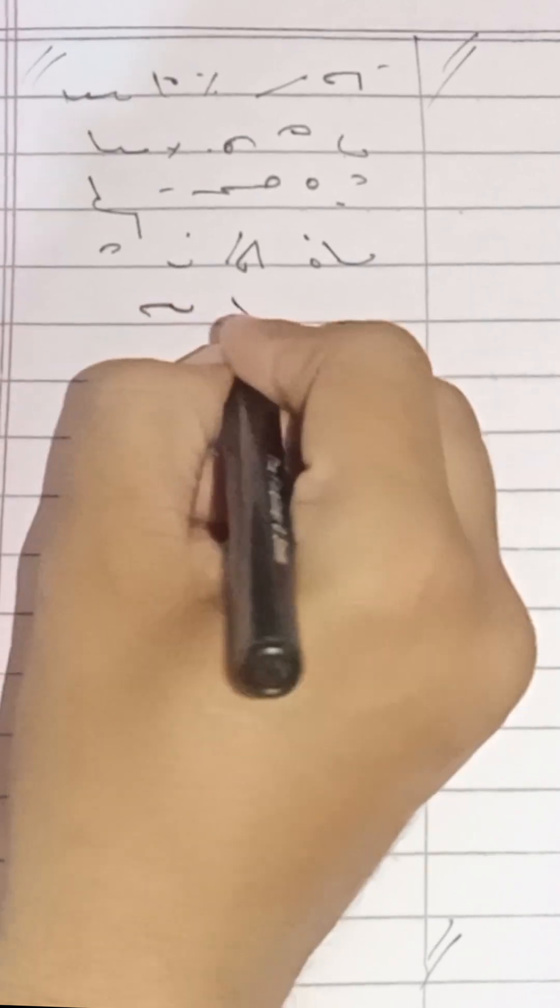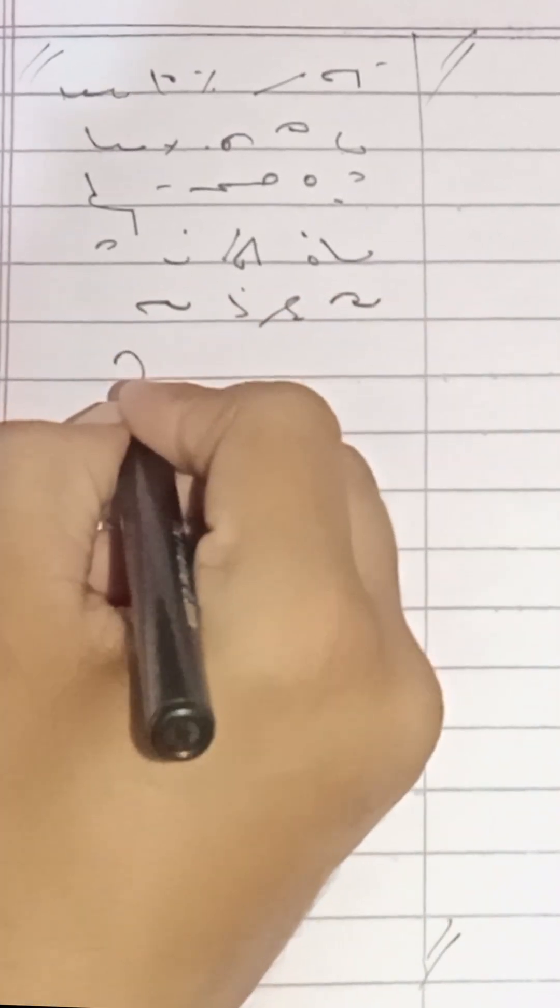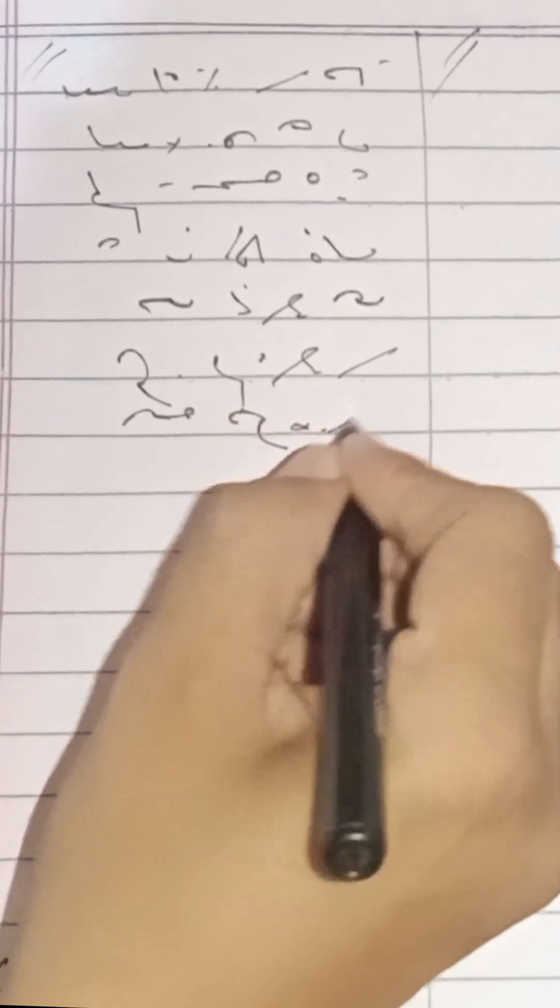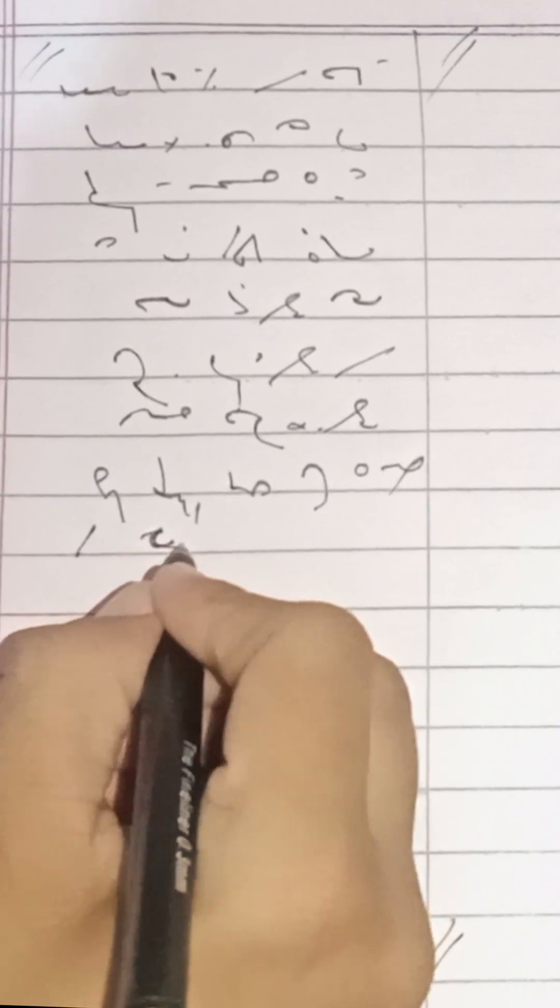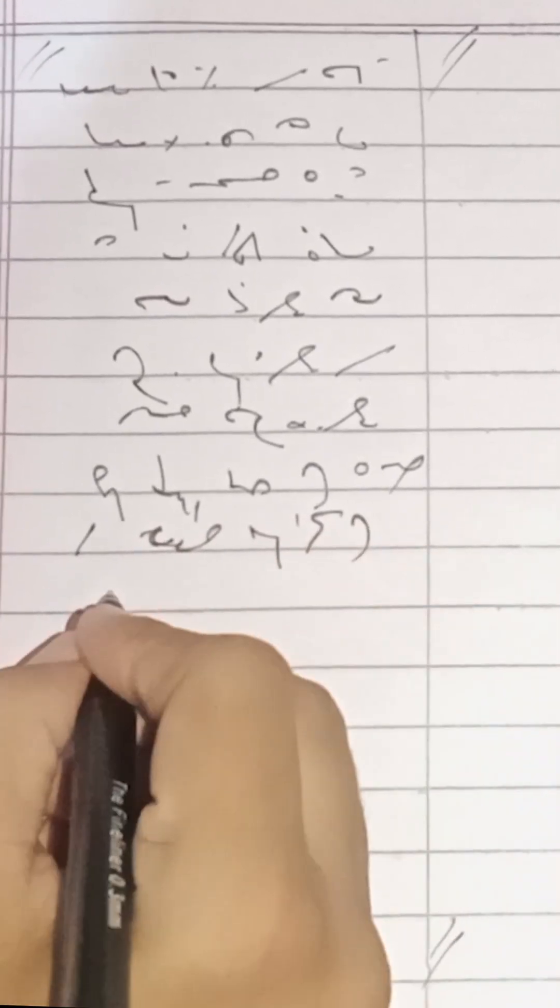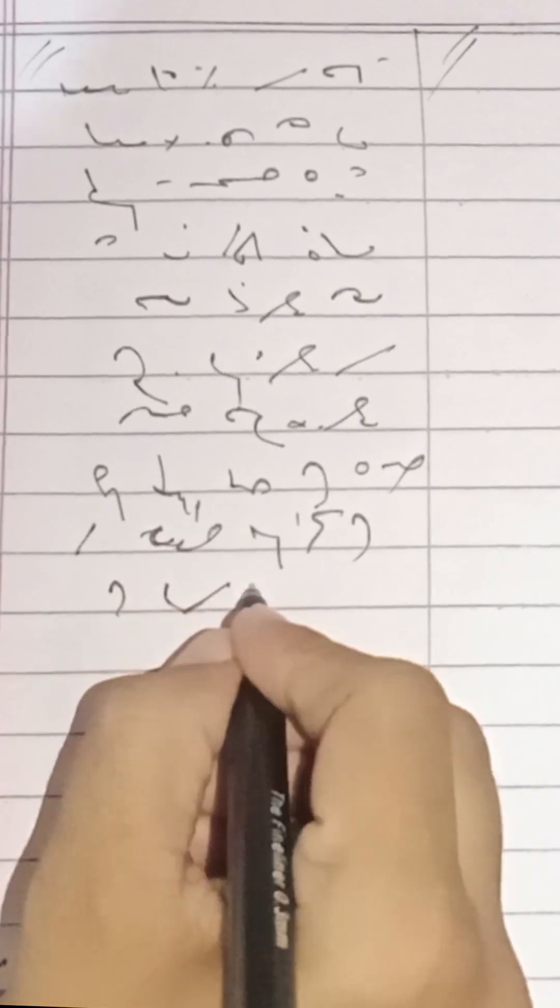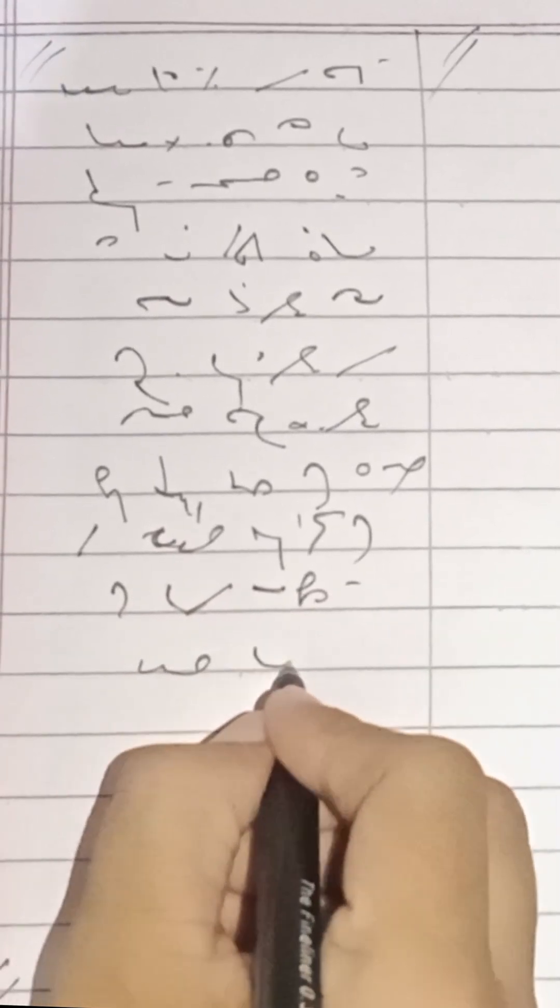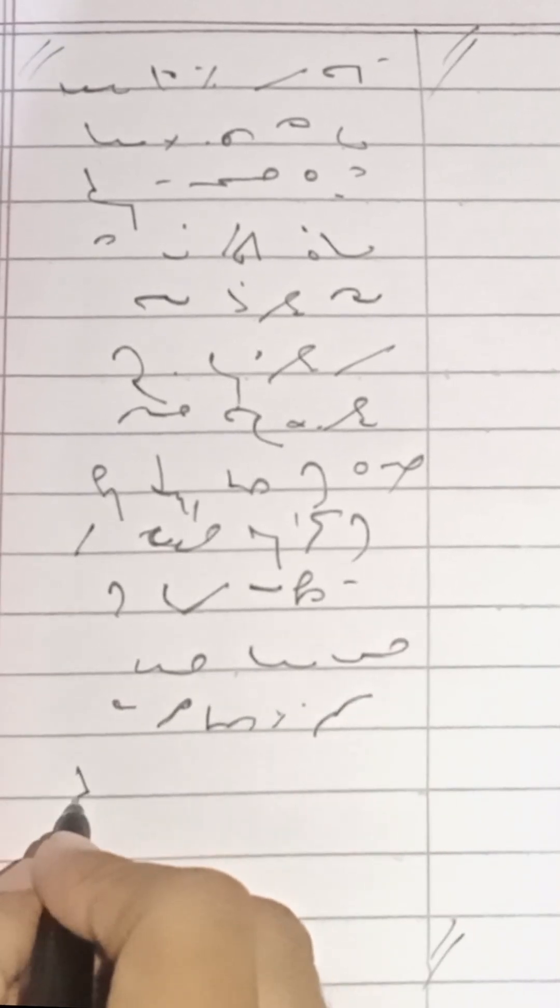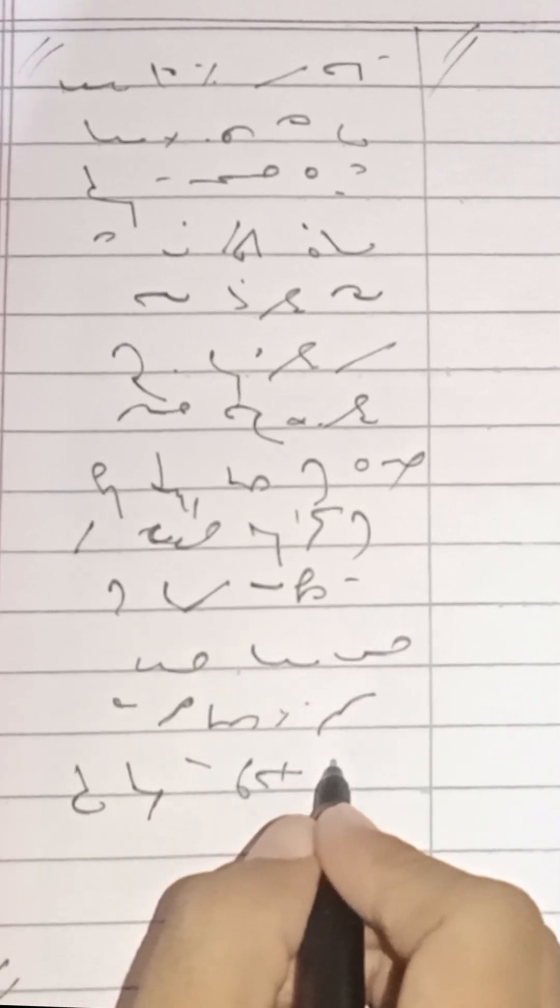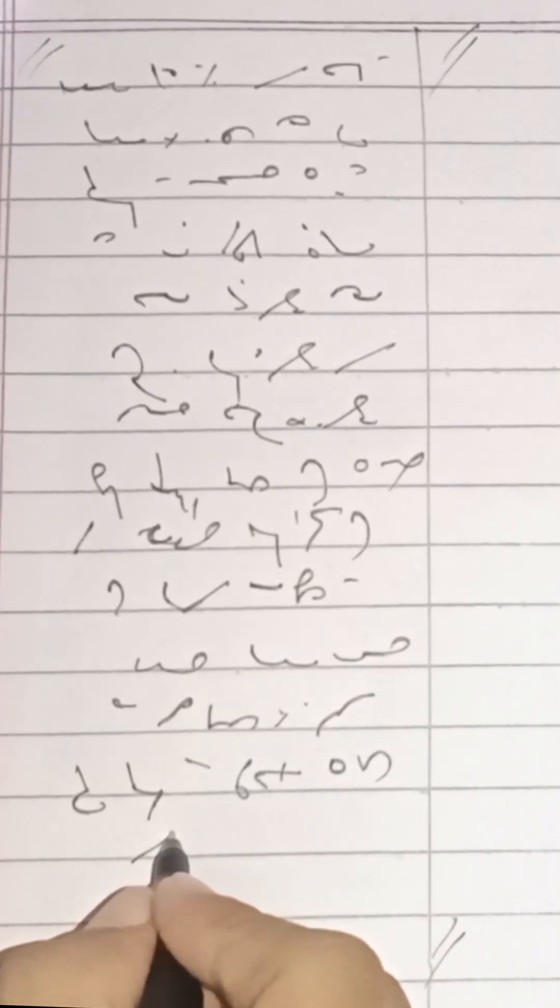Moreover, the respondent submitted disputed documents through his counsel which otherwise must have been brought on record through their author or in a statement of witnesses having nexus with such document. A learned division bench of this court has also rendered a judgment on this point.